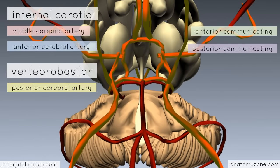So far we have looked at the first arterial source — the internal carotid artery — seeing how it divides to form the middle cerebral and anterior cerebral arteries, and how it sends off a posterior communicating branch to join with the posterior cerebral artery from the vertebrobasilar system. Before describing the vertebrobasilar system, the territories of the brain supplied by the anterior, middle, and posterior cerebral arteries will be shown.